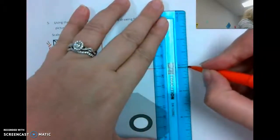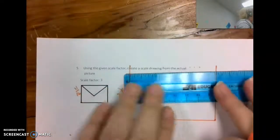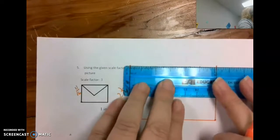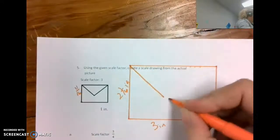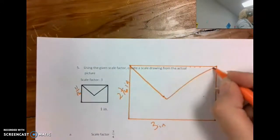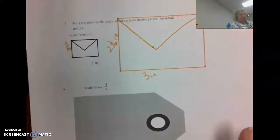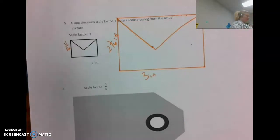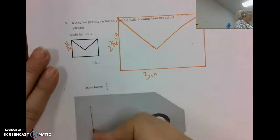Let's do that again for practice — that's how we get better. Notice this result is larger than the original, which is exactly what we expect. Now for the next part: scale factor of three-fourths. Since three-fourths is less than one, this is going to be smaller than the original. I'm going to sketch this out.